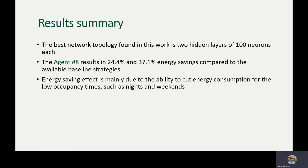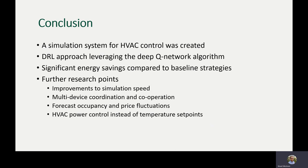The best network topology found in this work is two hidden layers of 100 neurons each. Agent number eight was able to achieve significant energy savings compared to the available baseline strategies, and this energy-saving effect is mainly due to the agent's ability to cut energy costs when the occupancy trend is low. In conclusion, a simulation system for HVAC control was created in this work. Using this system, a deep reinforcement learning approach leveraging the Deep Q-Network algorithm was constructed, and the best agent was able to reduce energy consumption significantly relative to two different baseline strategies.